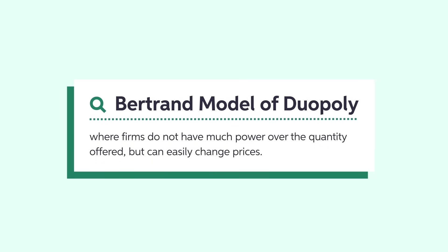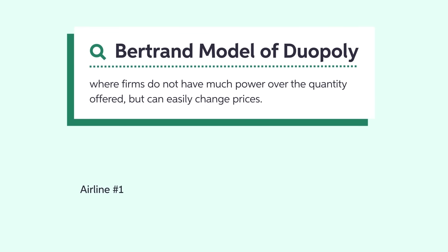In a Bertrand duopoly, firms do not have much power over the quantity offered but can easily change prices. Think about two airline companies competing over the route from New York to London. It is a direct flight and not much can differentiate their service, except for the ticket price. Therefore, the two airlines have an incentive to continuously cut their prices. This fierce price competition can lead to a perfectly competitive outcome, even with as few as two firms in a market.